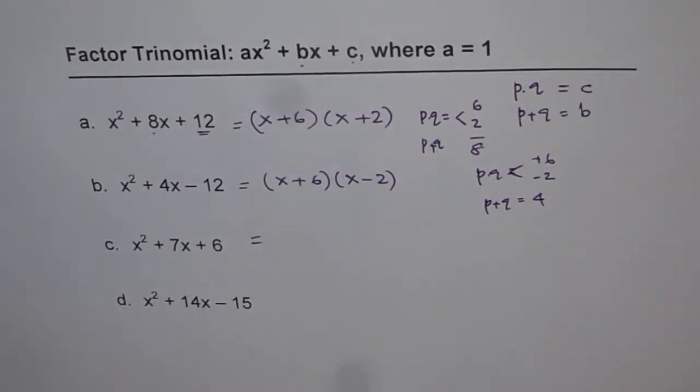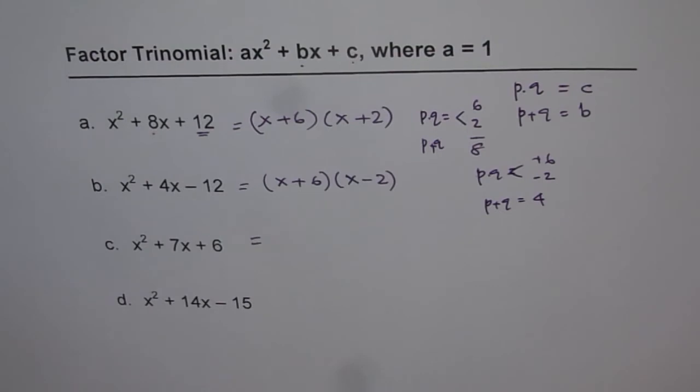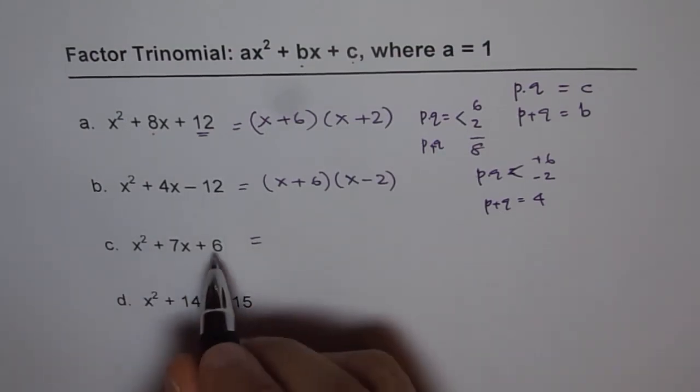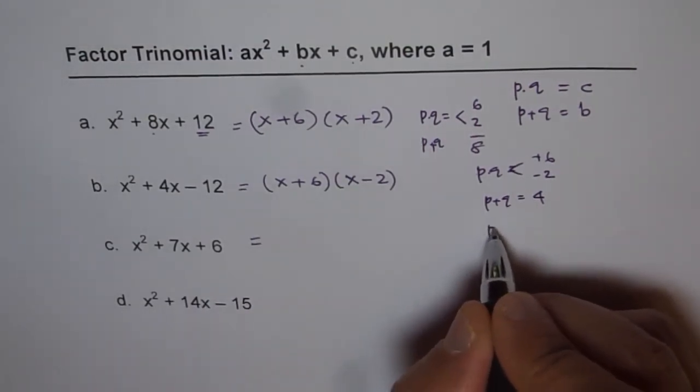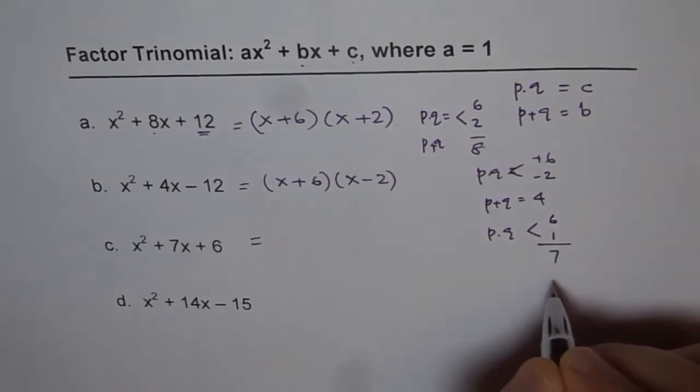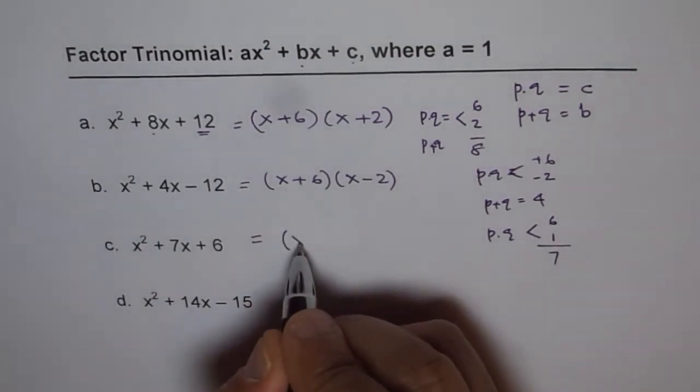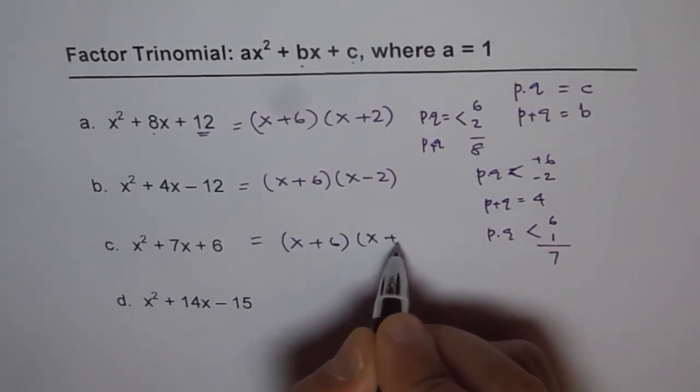Let's go through it once again with another example. The example here is x² + 7x + 6. Now we are looking for two numbers whose product is 6 and when you add them you get 7. So the numbers could be 6 times 1. When you add them you get 7. So we could write this as (x + 6)(x + 1).